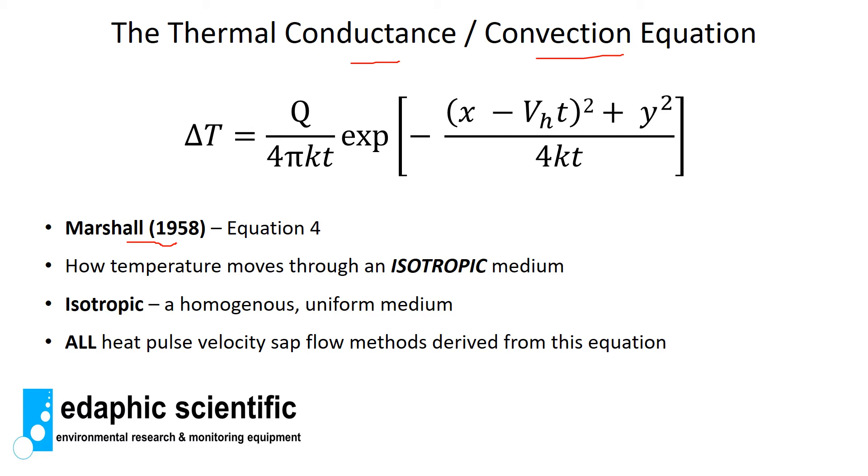In regards to plants, Marshall back in 1958 first developed this equation and this particular equation here was his equation 4 from his publication. It's important to keep in mind that this equation describes how temperature moves through an isotropic medium, and what we mean by isotropic is that the medium is homogeneous or uniform. You might think already that xylem or the sapwood of a plant is not homogeneous and it's certainly not uniform. You have xylem vessels of different diameters and cell walls of different thickness, but remarkably even though we violate this equation it still holds true and it's still a very accurate method to measure heat movement within plants.